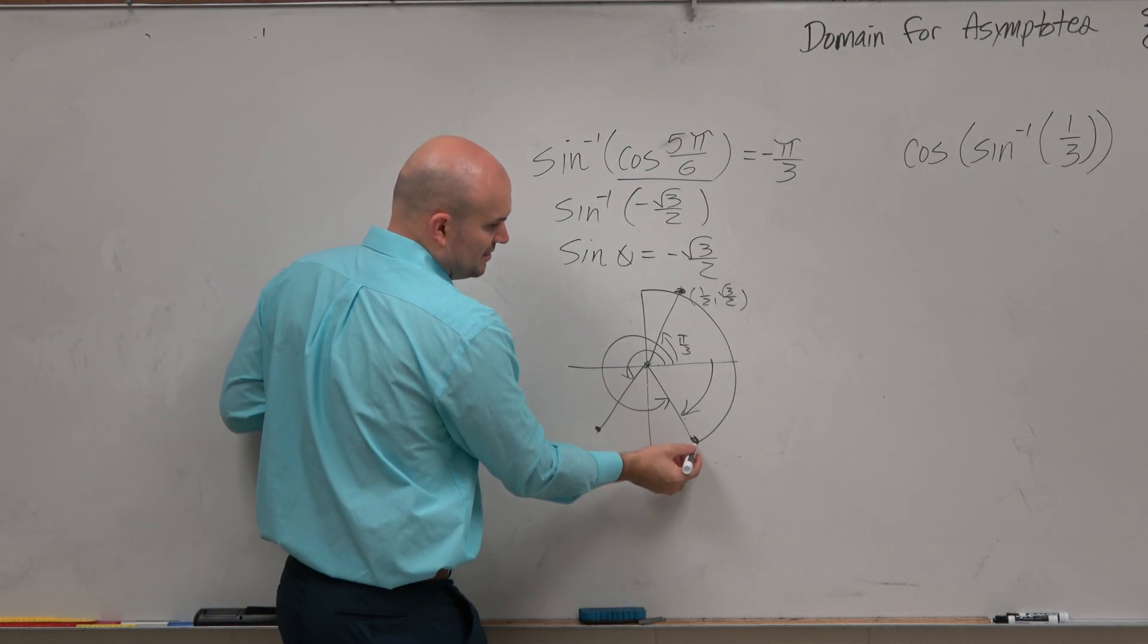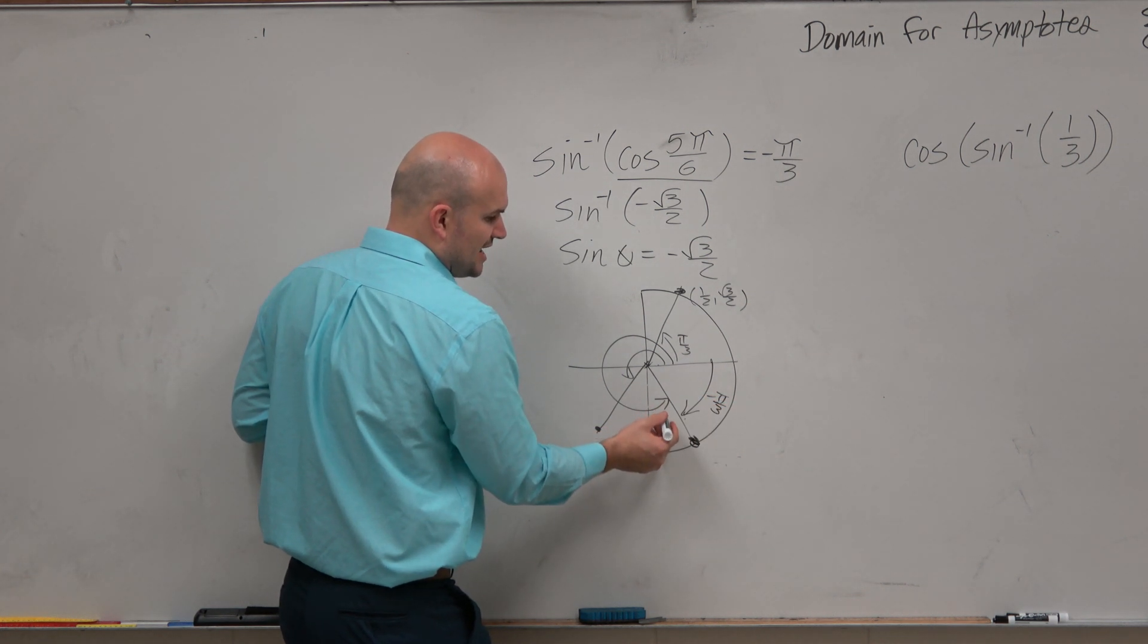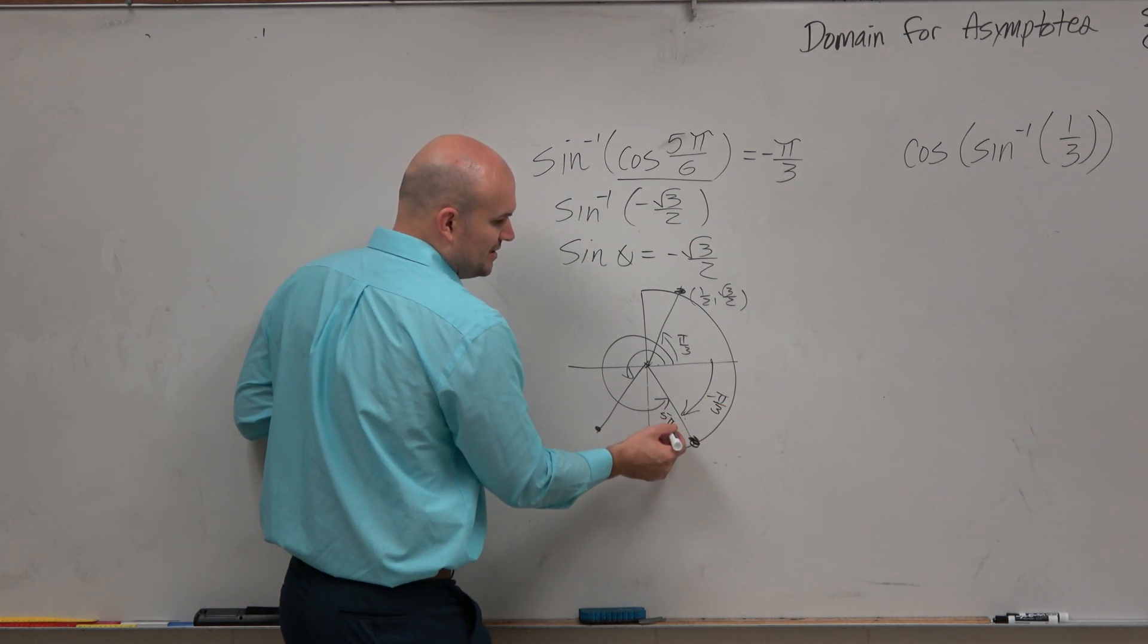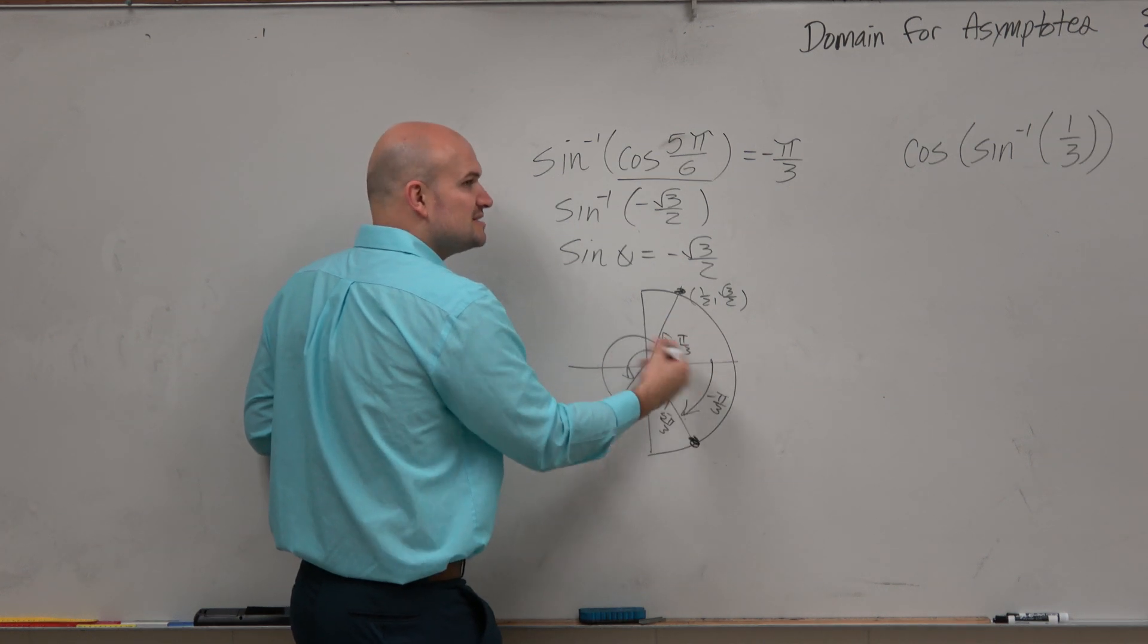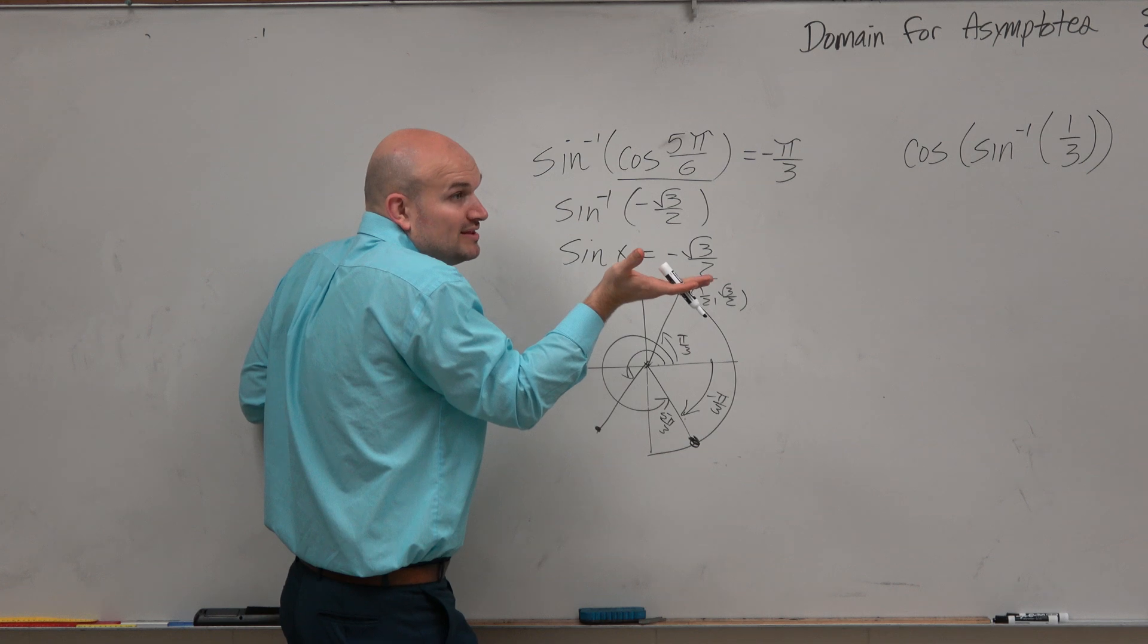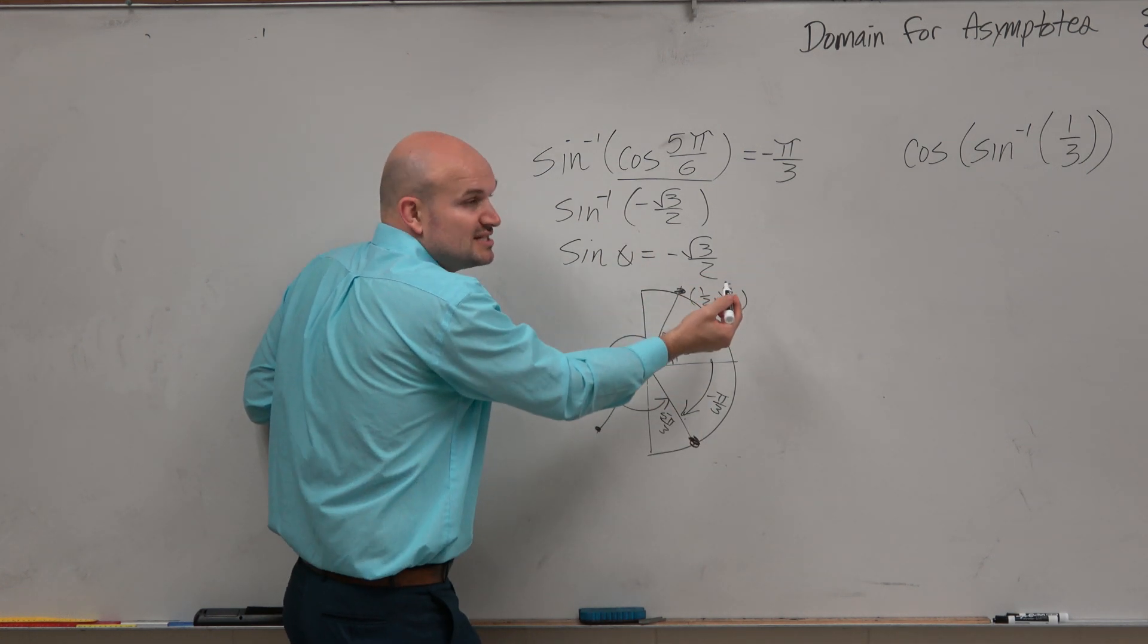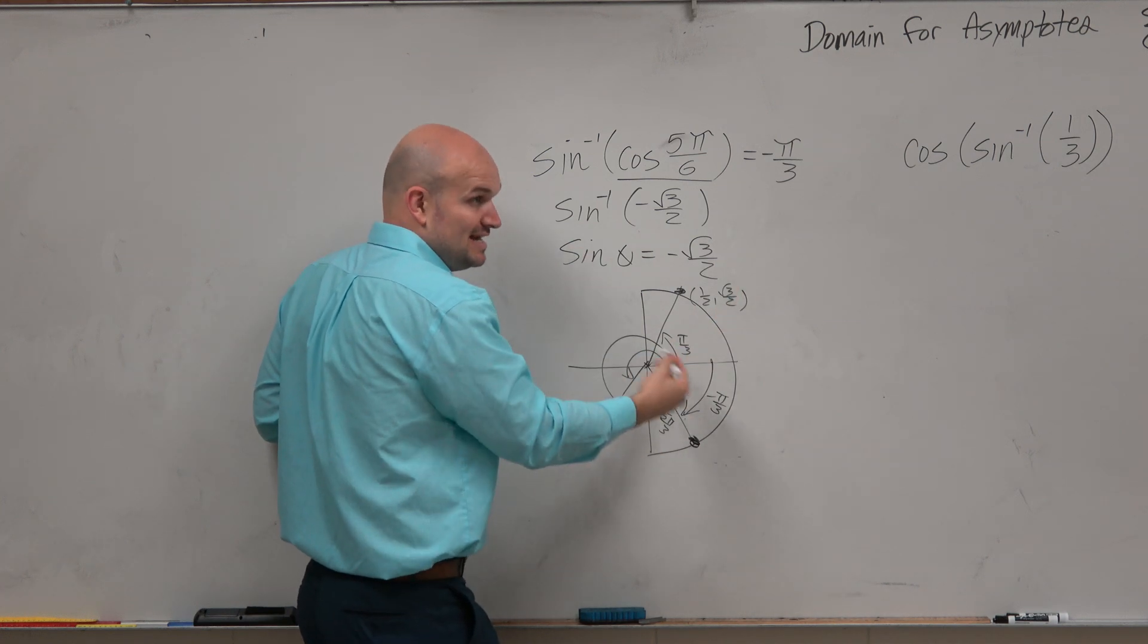Like if I said, hey, what's this angle? You could say negative π over 3. You could say 5π over 3, right? And then you can keep on adding and subtracting 2π. There's infinite many answers, right? But that's kind of the important thing. If I give you a point and I say, how many angles are there? That's what we discussed last class period. There's infinite many answers, right?